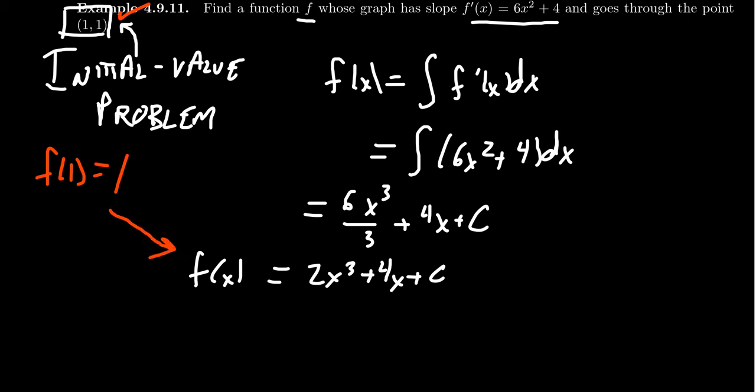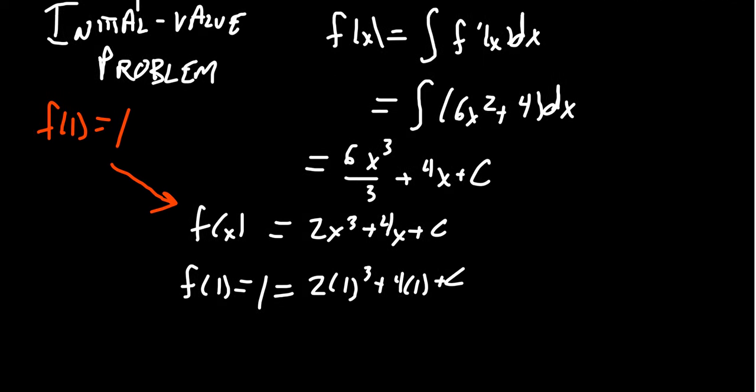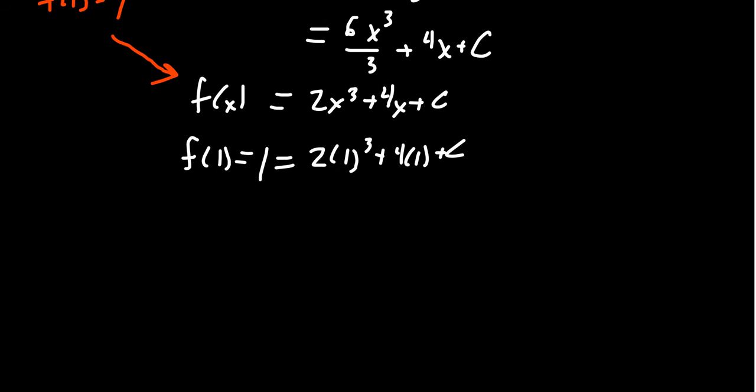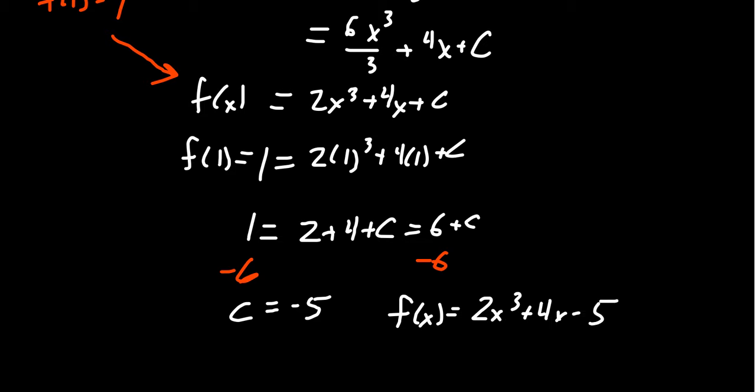If we plug that into this equation, we see that f(1) = 1, but we can also plug in 1 for x. So we get 2(1)³ + 4(1) + C. Let me slide this down and up a little bit. If we simplify, the left-hand side is still 1, the right-hand side we get 2 + 4 + C, which equals 6 + C. Let's subtract 6 from both sides. We end up with C = -5. So that's then our function: f(x) = 2x³ + 4x - 5.